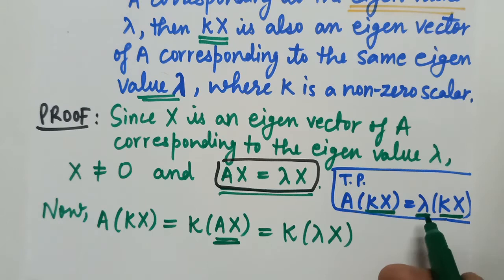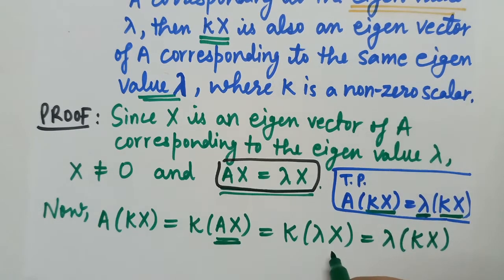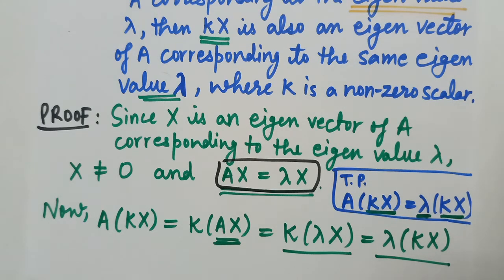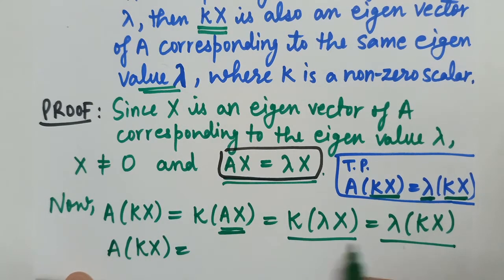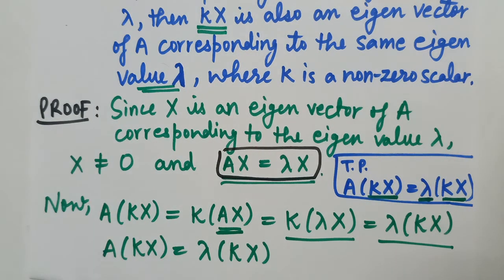We need to show lambda into kX. K into lambda X can be written as lambda into kX, because lambda and K are both scalars — the order of scalar multiplication does not matter. So we have shown that A into kX equals lambda into kX, which is exactly the condition we needed to prove.